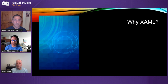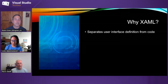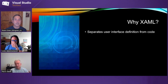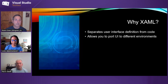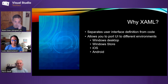Let's talk about why XAML — it's that whole idea of separating our user interface from the code. Think about HTML: HTML is the UI piece, and then we write code to affect that. That's what XAML does too. It allows you to port the UI to different environments — Windows, Android, Mac OS, iPhone. We can write once and then deploy it to these different environments.